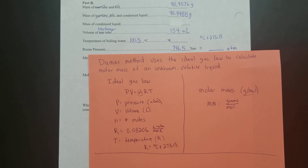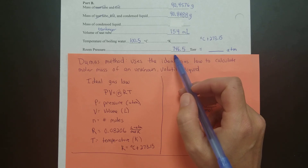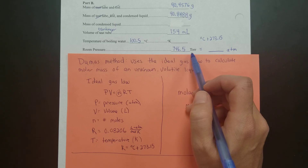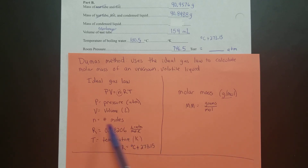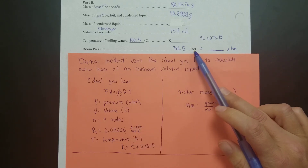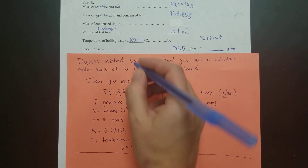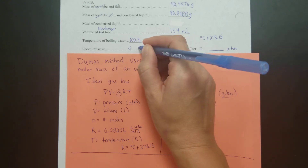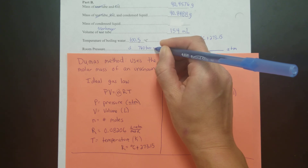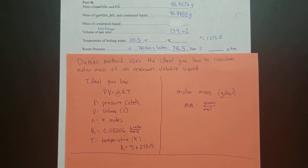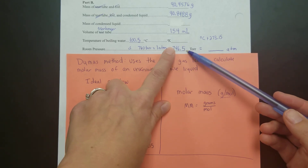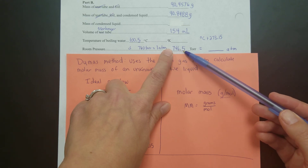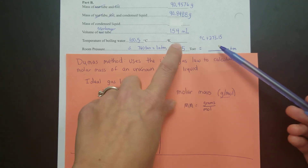Next, we have the room pressure, which the instructor gives based on the pressure in the room at the time of the experiment. That was given as 746.5 torr — in the video it said millimeters of mercury, but one millimeter of mercury equals one torr, so it's the same value. The ideal gas law requires pressure in ATM, so you need to convert torr to ATM using the conversion factor: 760 torr equals 1 ATM. Set up dimensional analysis to cancel out torr, leaving ATM. With four significant figures in the initial value, keep four sig figs in your answer.